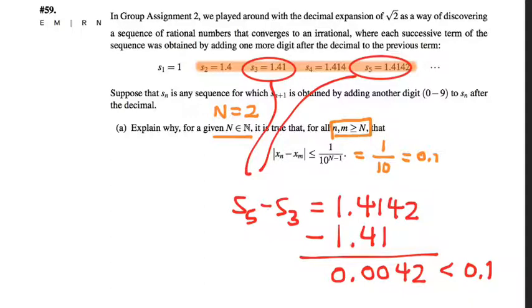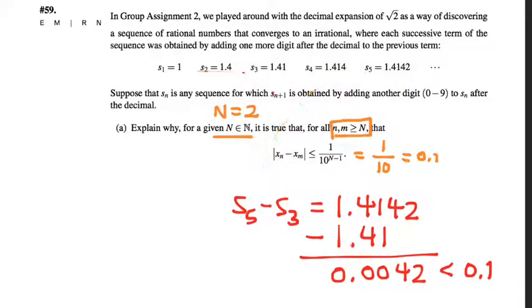How did you explain why this necessarily will always happen? I don't exactly remember what I wrote, but I think it was something on the lines of because you're adding a decimal point, everything like that. It's forever increasing. Okay.